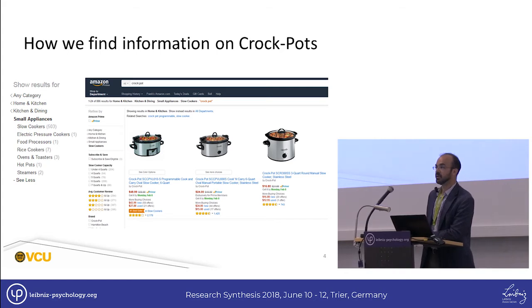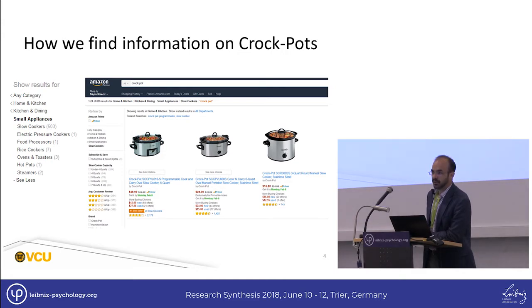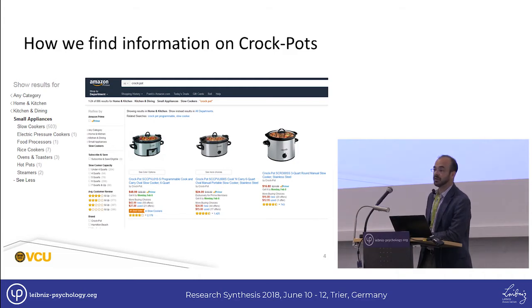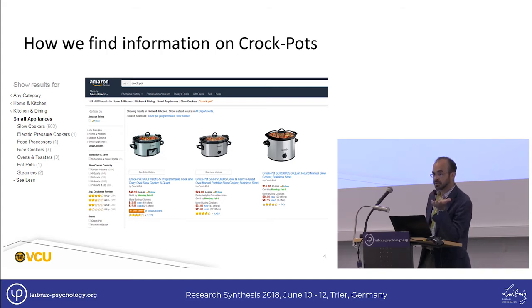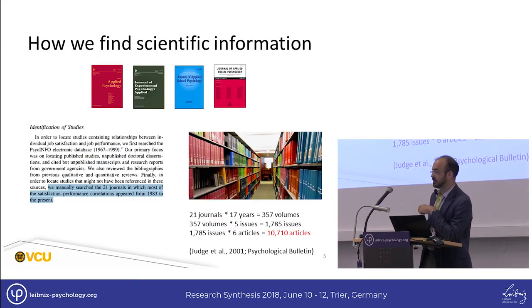Usually when I introduce MetaBus, I talk about what I call the crockpot problem. When we go on Amazon.com, we can find things very rapidly. If I were searching for crockpots, I could figure out delivery time, pick a color, four or six quarts with a timer or without, and know exactly the cost. On the left side of the screen you see what looks like a taxonomy — crockpots nested under slow cookers, nested under small appliances, nested under kitchen and dining. This taxonomy allows us to easily navigate their universe of products. This is how we find products — but not how we find scientific information. In many ways, scientific information takes a backseat to crockpots.